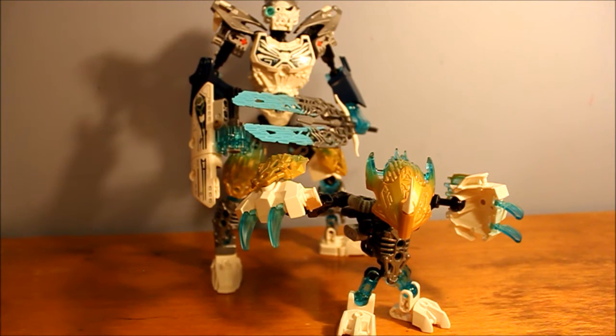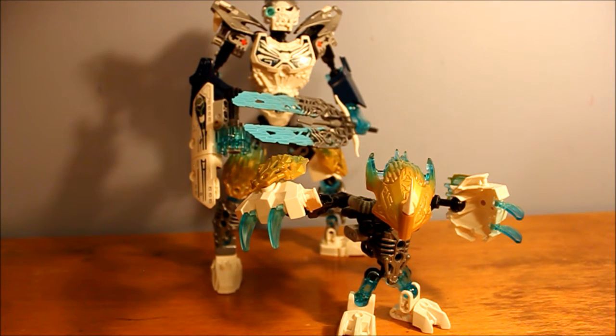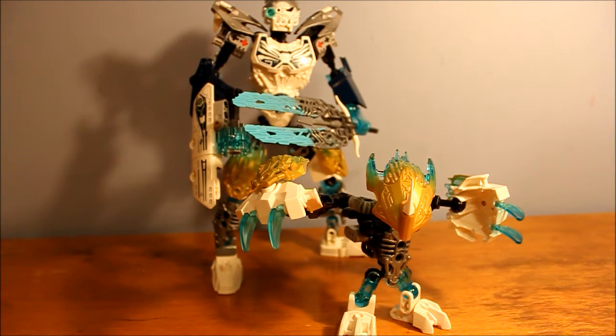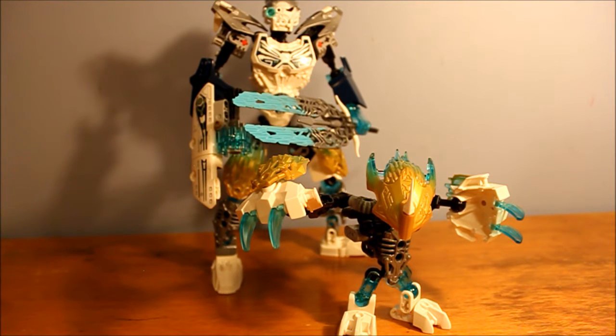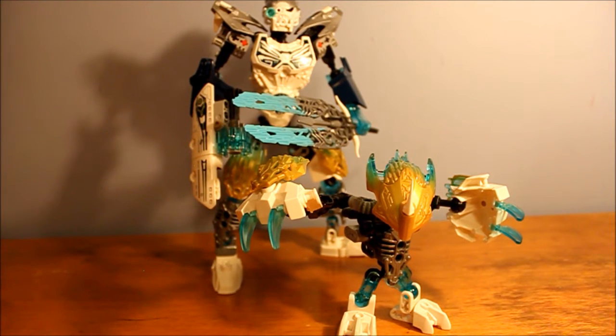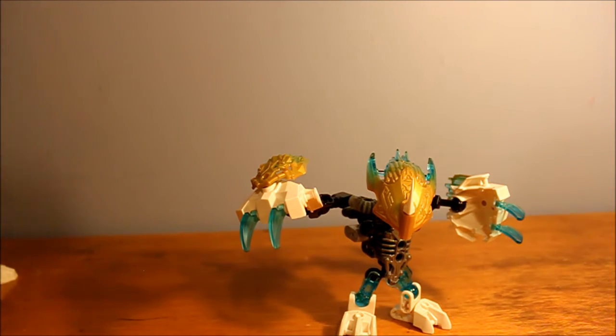So, here's Kopaka and Melum. This is the two-pack. I'm happy with Kopaka. I'm okay with Melum. They kind of skimped out on Melum, which is a little disappointing. But, it's a sixth creature. And, I'm happy with the character overall. So, I'm just going to set Kopaka aside. Look at Melum.